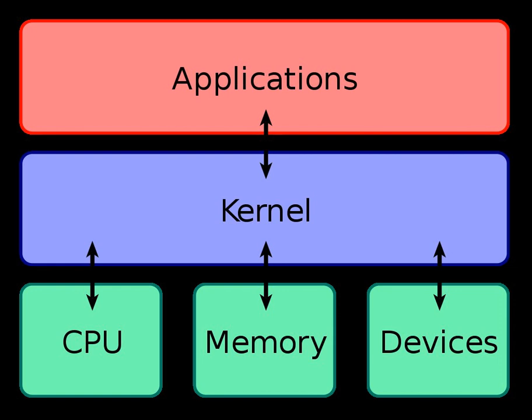Hybrid kernels are used in most commercial operating systems such as Microsoft Windows NT 3.1, NT 3.5, NT 3.51, NT 4.0, 2000, XP, Vista, 7, 8, 8.1, and 10. Apple Inc.'s macOS uses a hybrid kernel called XNU, which is based upon code from OSF/1's Mach kernel and FreeBSD's monolithic kernel.